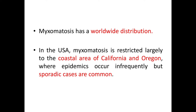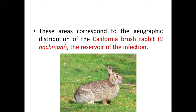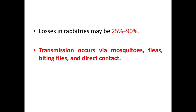Myxomatosis has a worldwide distribution. In the US, myxomatosis is restricted largely to the coastal areas of California and Oregon, where epidemics occur infrequently but sporadic cases are very common. These coastal areas correspond to the geographic distribution of the California brush rabbit, Sylvilagus bachmani, which is the reservoir of the infection.